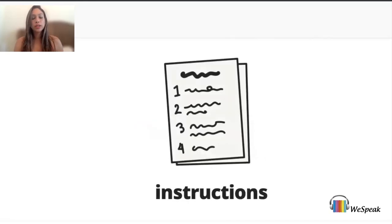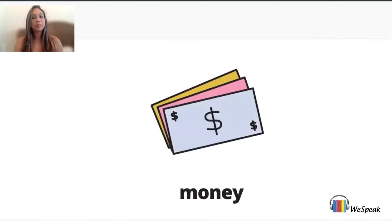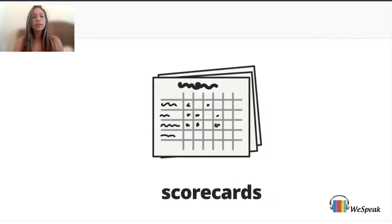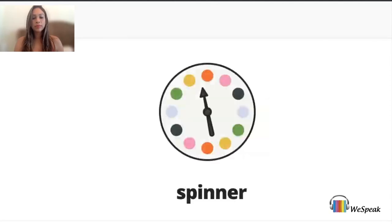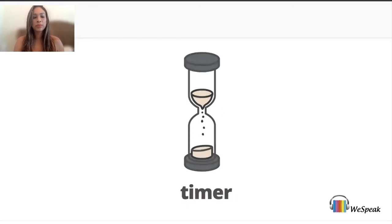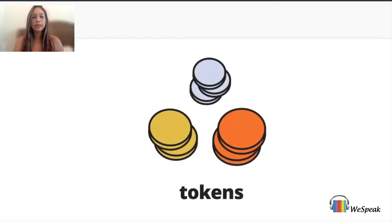Instructions. Money. Pencils. Scorecards. Spinner. Timer. This is a sand timer. Tokens.